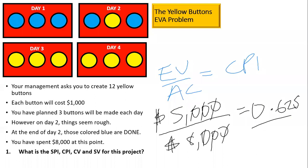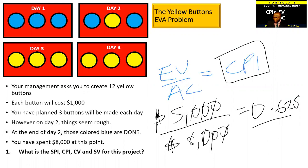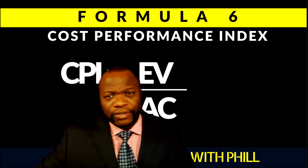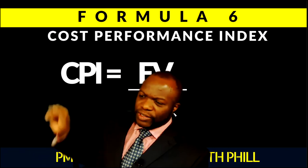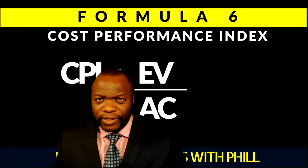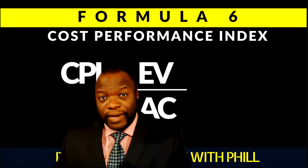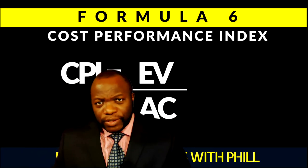And that, my friends, is how you calculate the cost performance index. It is a very good measure of cost performance across the entire project, and it's good to compare performance across projects of various sizes. So if on the exam you ever get the question about which is better for cost performance, think about this: CPI is universal — cost variance is great, but it is not as great as CPI because CPI cuts across all projects of various sizes. See you in the next one.